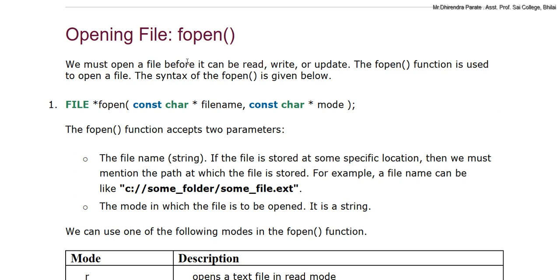The first function is fopen. We must open a file before it can be read, written, or updated. The fopen function is used to open a file. The syntax of the fopen function is given below. We use fopen for any file we want to open. When we want to read, write, or update, first of all we need to open this file using fopen, and after that we can perform read, write, and update operations.